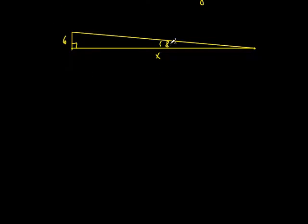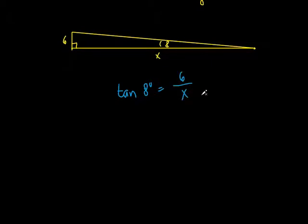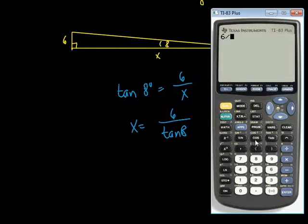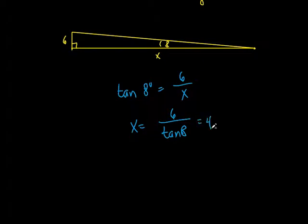Now do the trig. The angle is eight degrees, the opposite side is six, and X is adjacent. So tangent of eight degrees equals opposite over adjacent: 6 over X. Switch it: X equals 6 divided by tangent of 8. Calculator gives 42 — we'll round to 43 feet. That's how far the swimmer is from the tower.